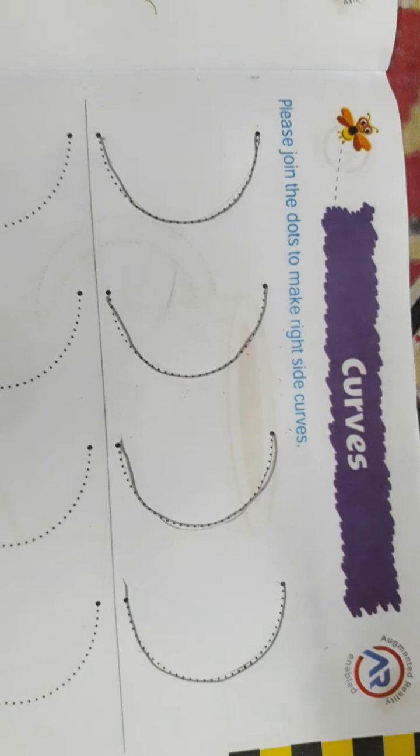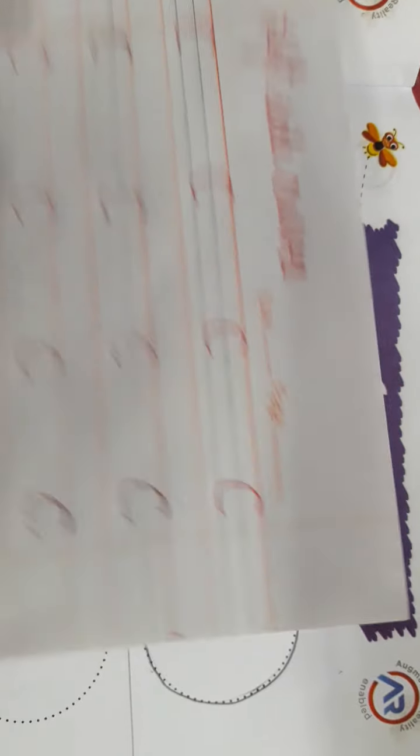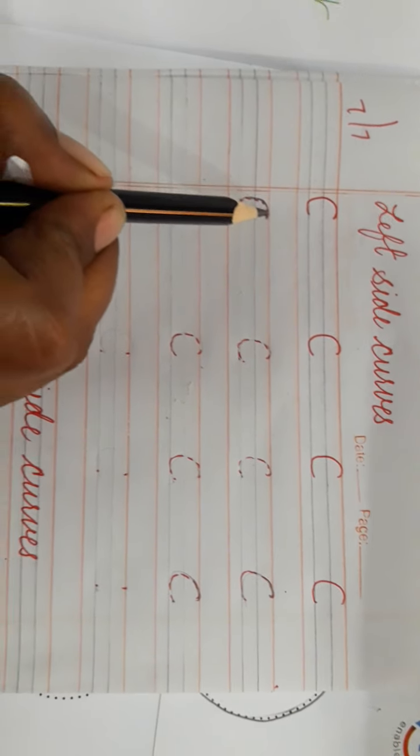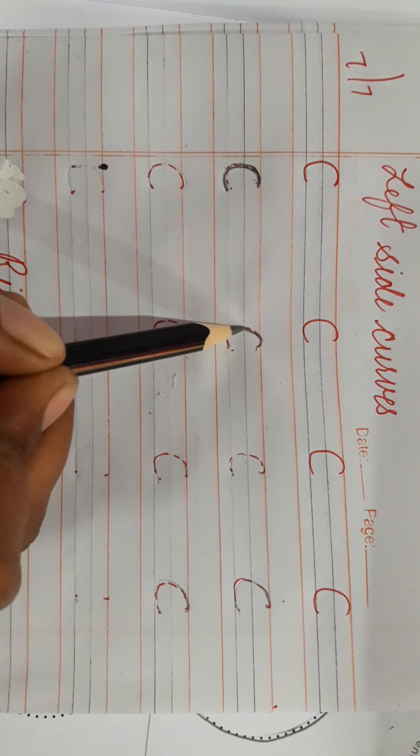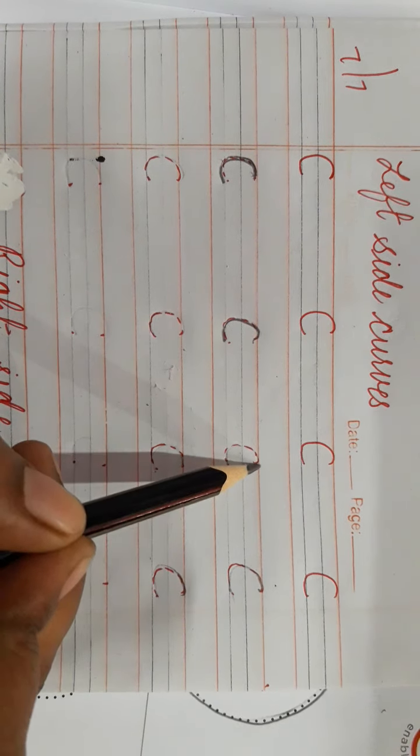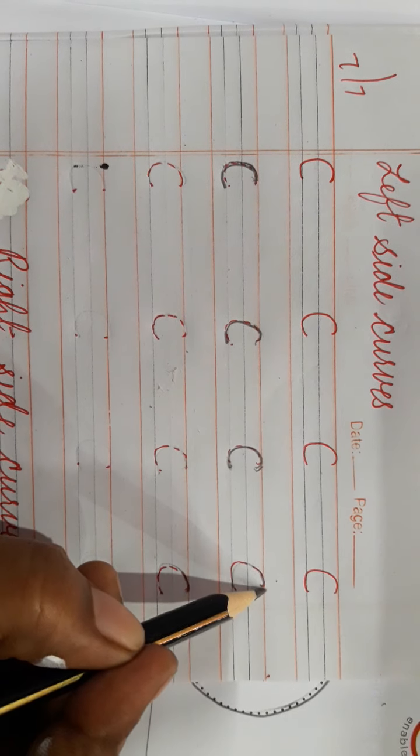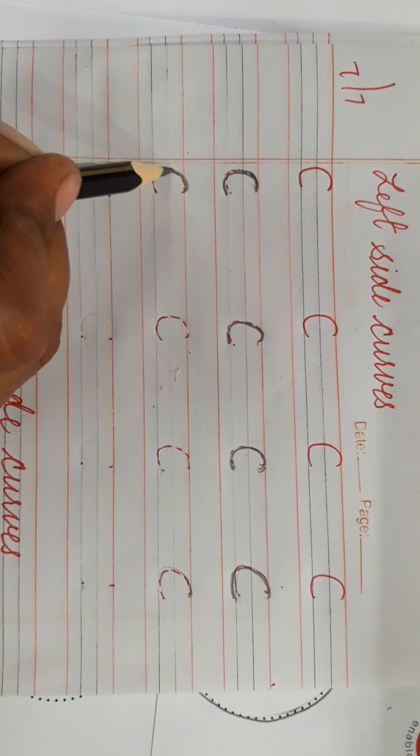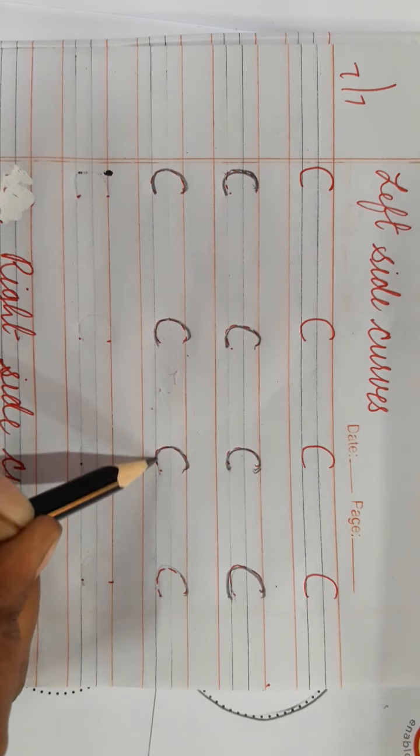Okay children. Now, we will do a copy or a notebook. See here. I am now dot to dot co join. Like this. You will also do a copy. Like this. Dot co dot join. Left side curve will be made. Okay. Like this.